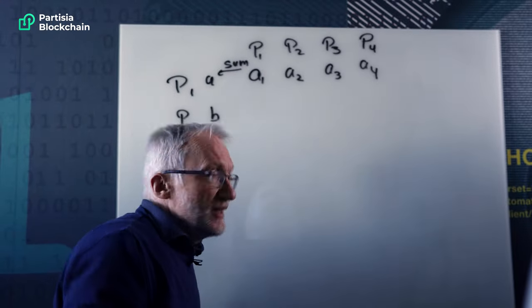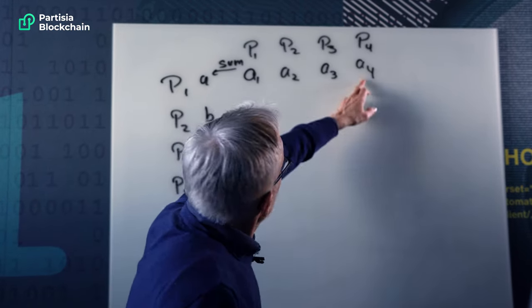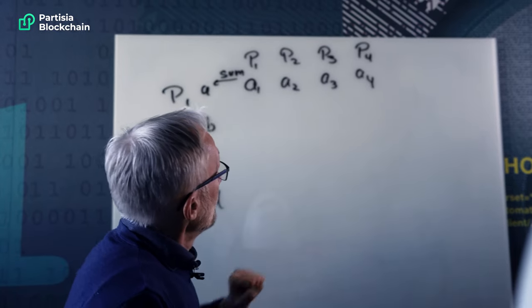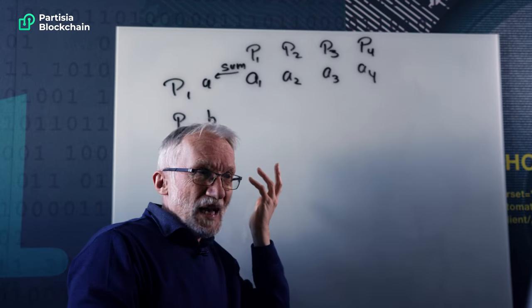And the first important thing to notice here is that even one guy, say the fourth guy here, even if he gets something from P1, he learns nothing from that about P1's salary because that's just a random number. And from his point of view, the other numbers could be absolutely anything.